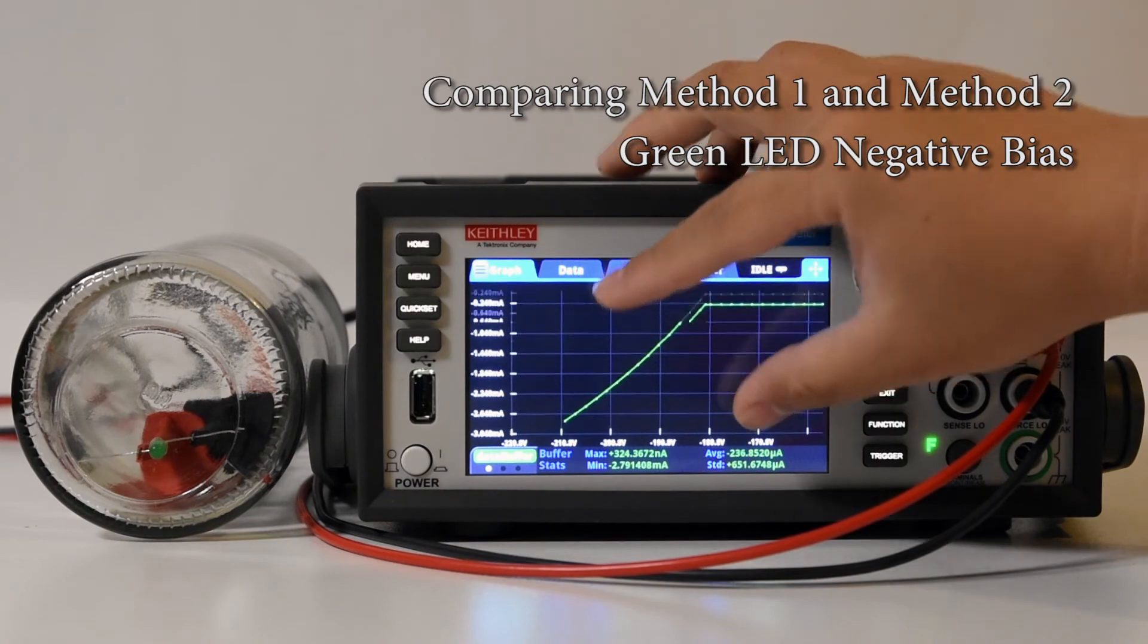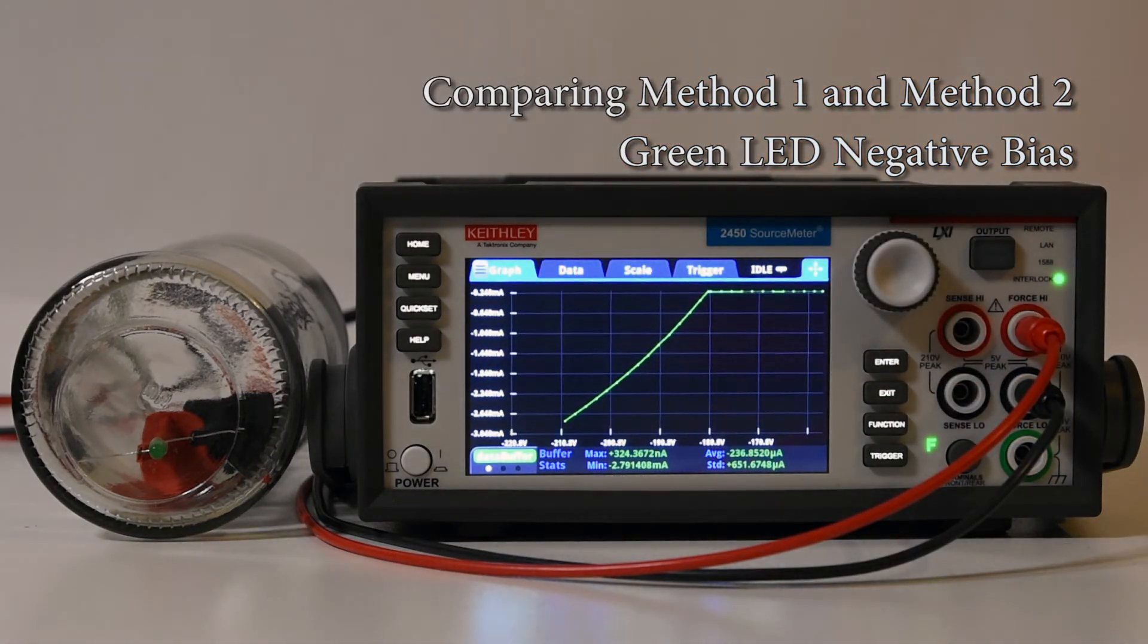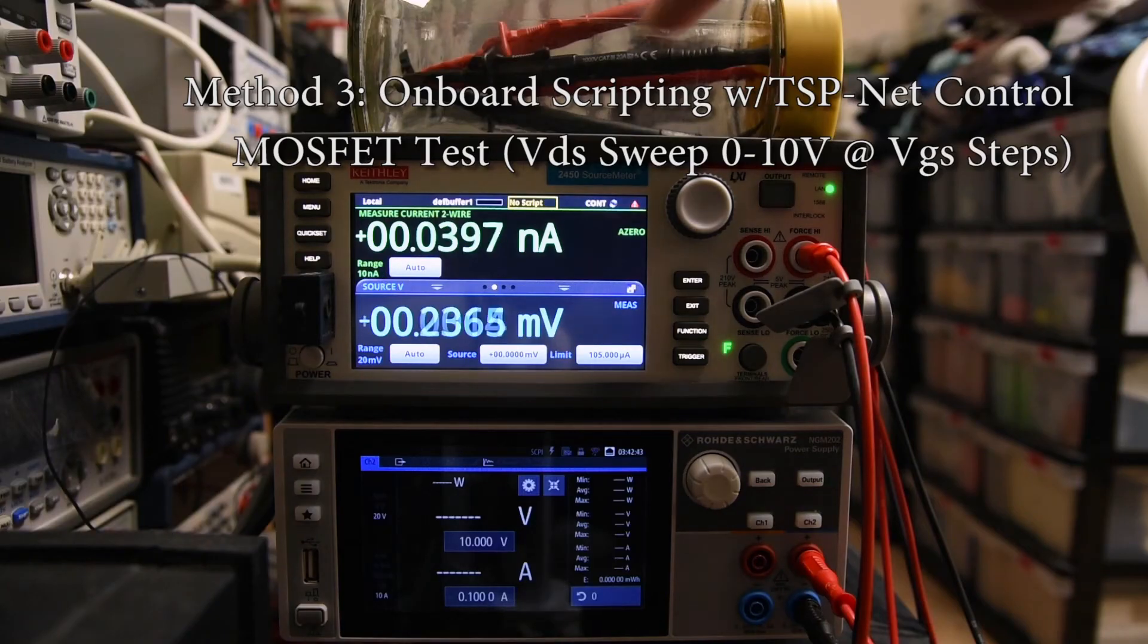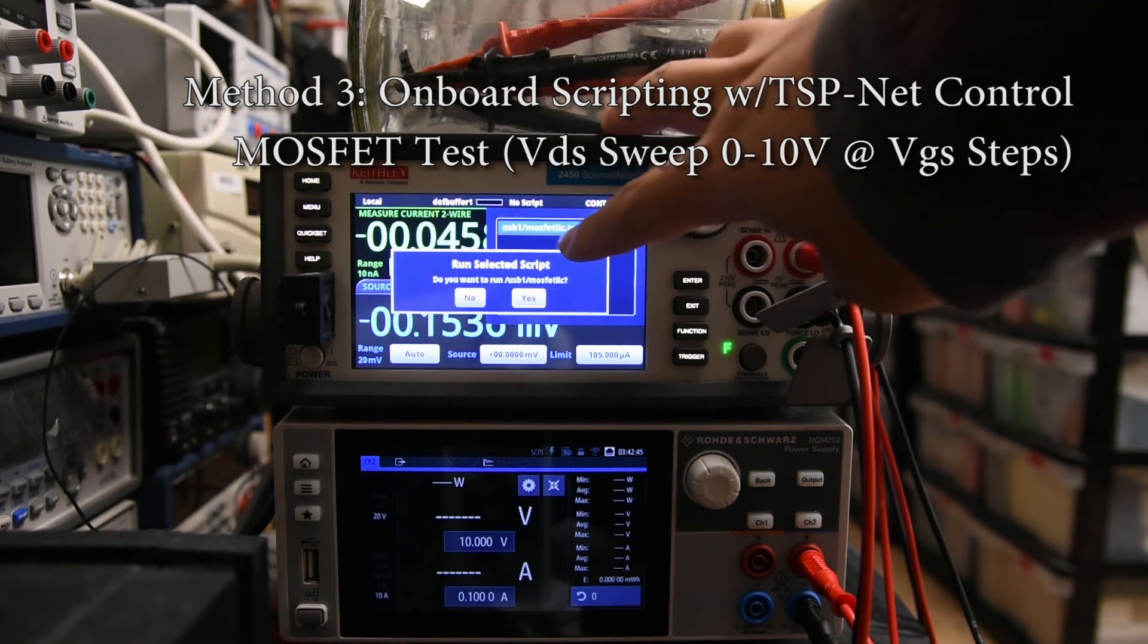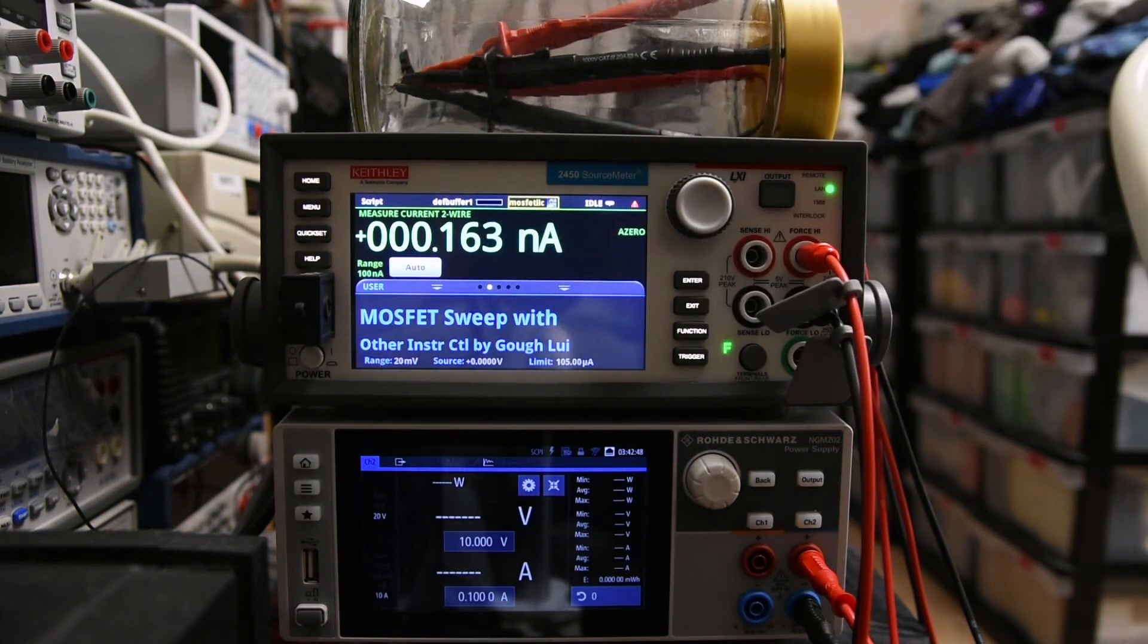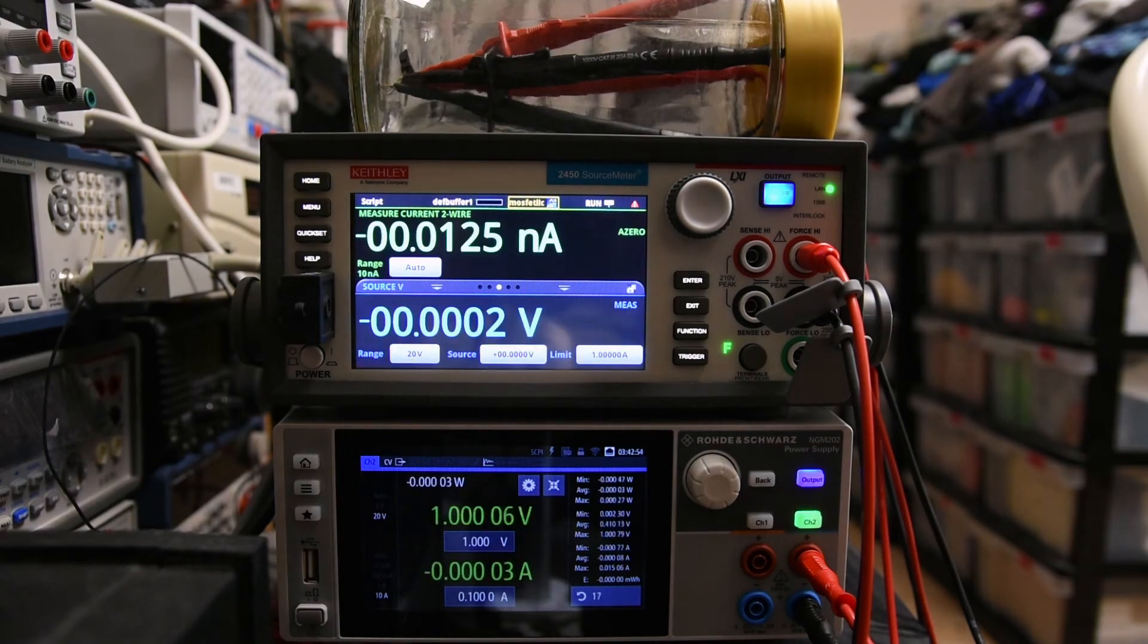However, there is potential for the IV tracer to improve into the future. The third method is to use the onboard TSP capabilities to run a script. In this case, I am testing a MOSFET which requires at least two power supply channels. I have coded a script to make this happen.